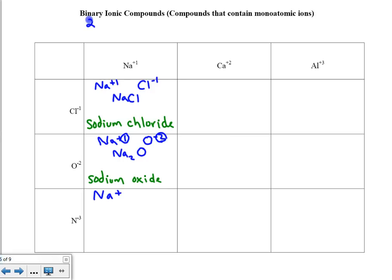Sodium ion and nitride ion, crisscrossing. We get the formula Na₃, because I'll need 3 of these positive 1 ions to match up with 1 of these nitride ions. Naming this compound, this is sodium nitride.